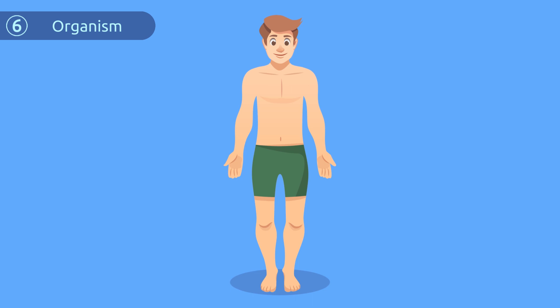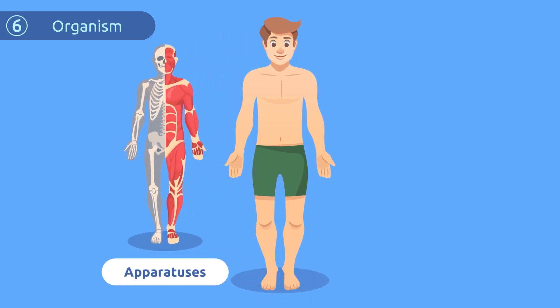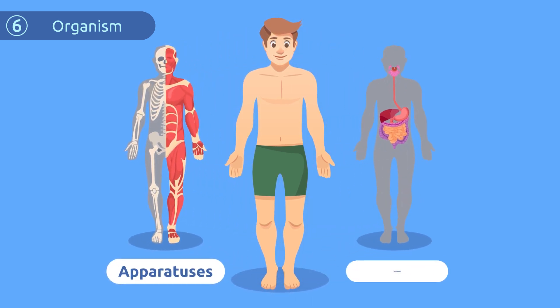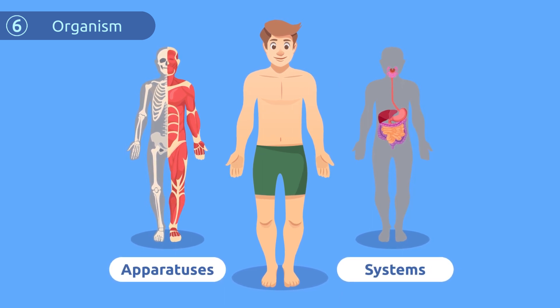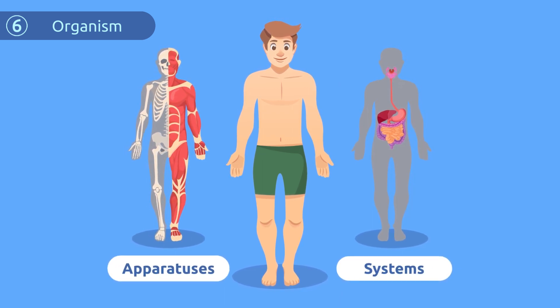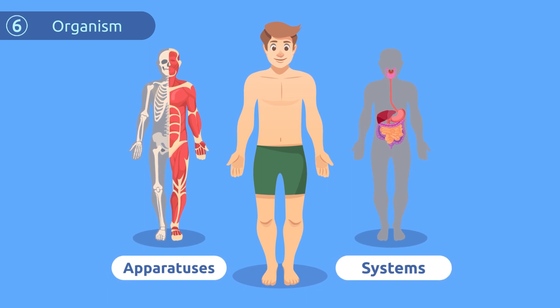And finally we'll talk about the organism, which is made up by the combination of all apparatuses and systems. We are an organism — that is, we are made up of apparatuses and systems.